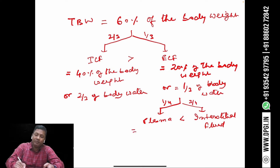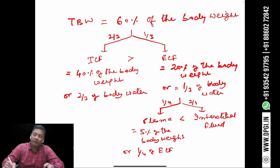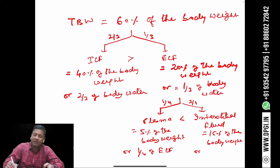Therefore, plasma equals one-fourth of the ECF, which is 5% of the body weight. The interstitial fluid equals three-fourths of the ECF, which is 15% of the body weight.